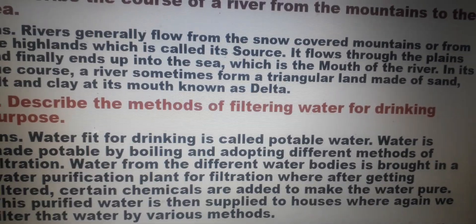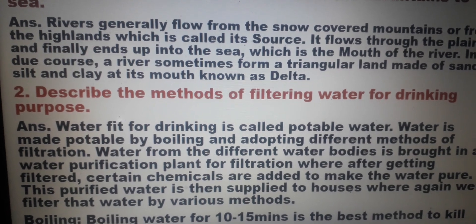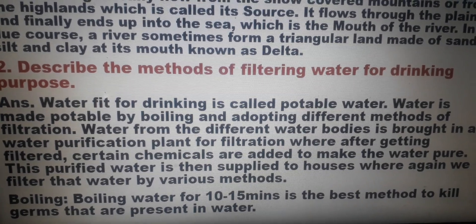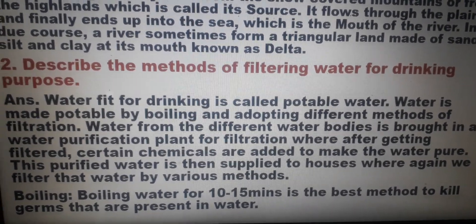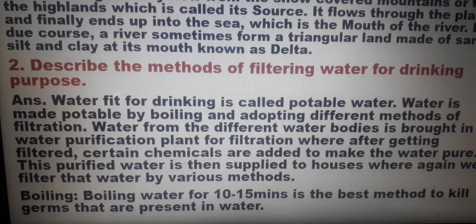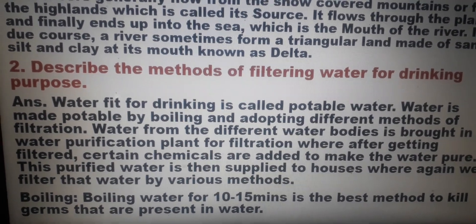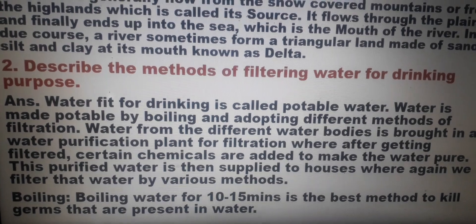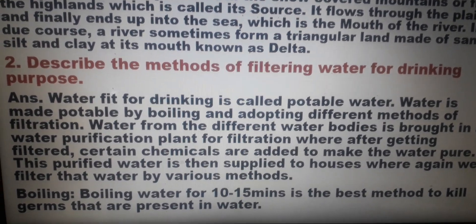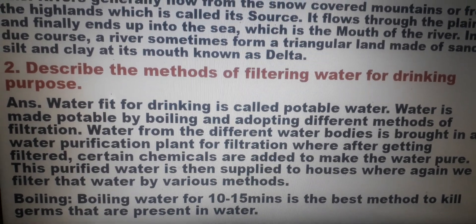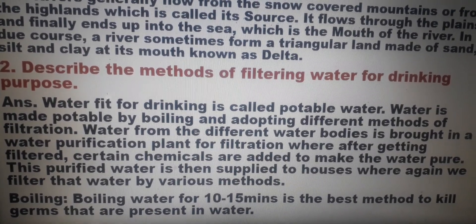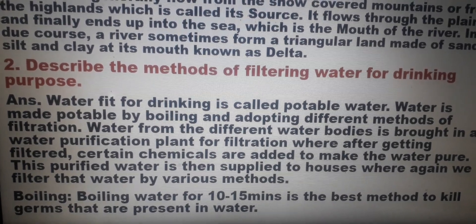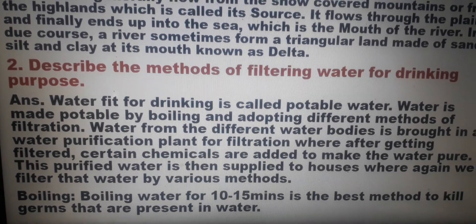Question number 2: Describe the methods of filtering water for drinking purpose. Answer: Water fit for drinking is called potable water. Water is made potable by boiling and adopting different methods of filtration. Water from different water bodies is brought to a water purification plant for filtration, where after getting filtered, certain chemicals are added to make the water pure. This purified water is then supplied to houses, where again we filter that water by various methods.